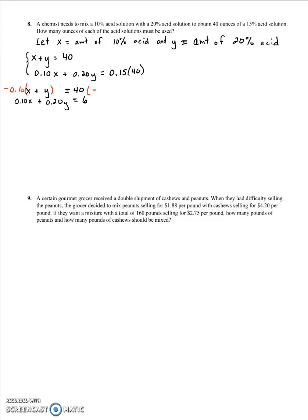And remember, we have to do that on both sides. When we do that, we get, so here's our step one, our step two. Now we distribute. So we have negative 0.10X minus 0.10Y equals a negative 4. And we'll just bring our other equation down. And now we're going to add them together.